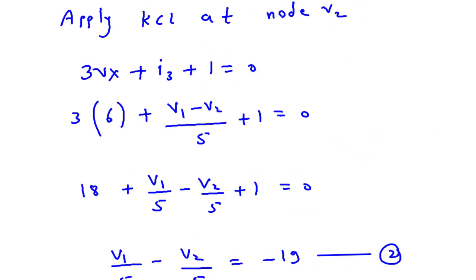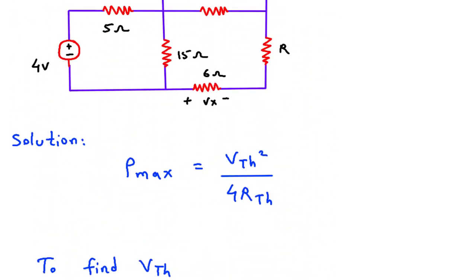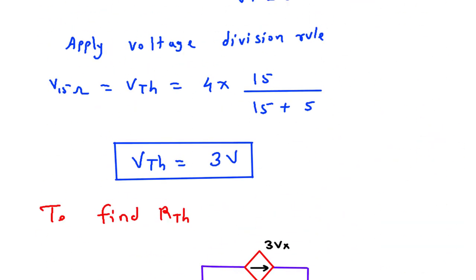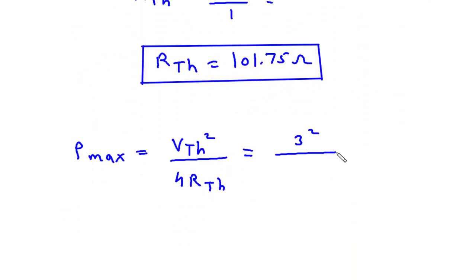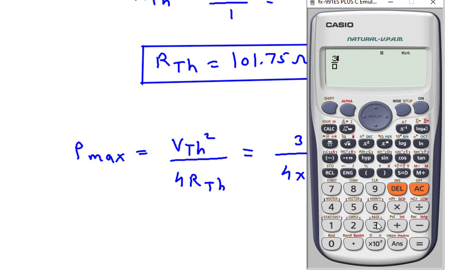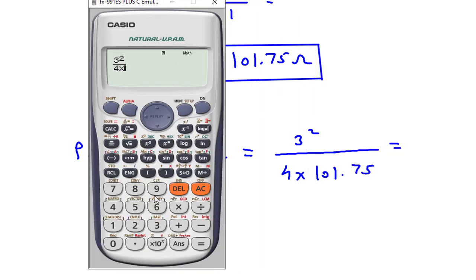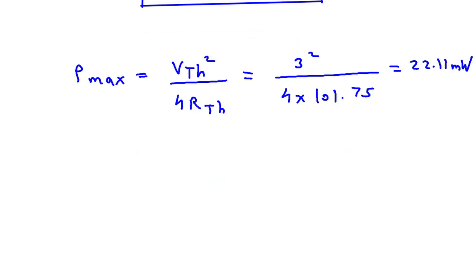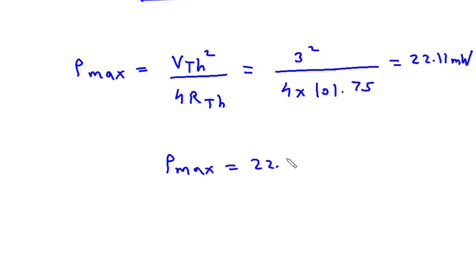Now we have Vth and Rth, so we can find the value of Pmax. Pmax equals Vth squared divided by 4Rth, so Pmax equals 3 squared divided by 4 into 101.75, which equals 22.11 milliwatts. This is the value of Pmax — Pmax is equal to 22.11 milliwatts.